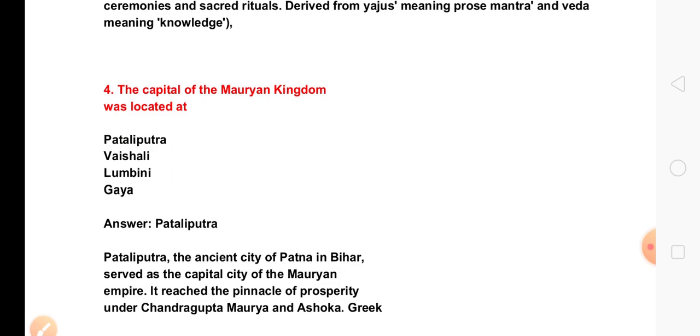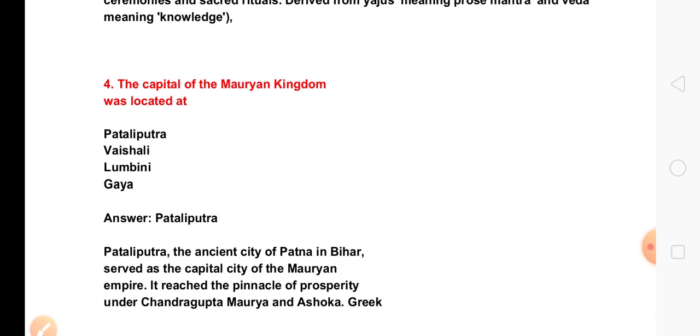The capital of the Mauryan kingdom was located at Pataliputra.